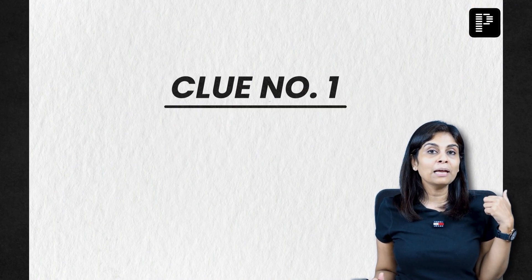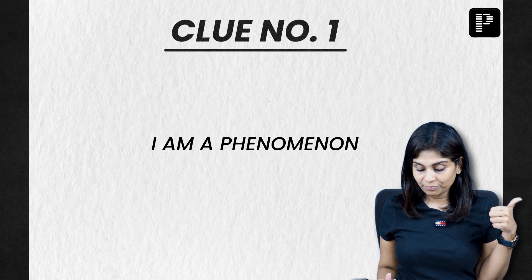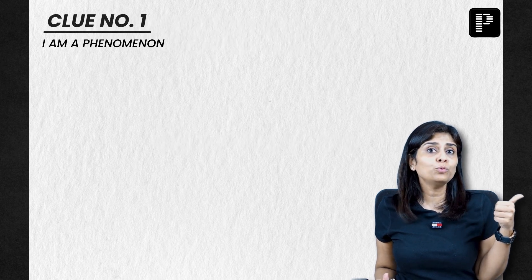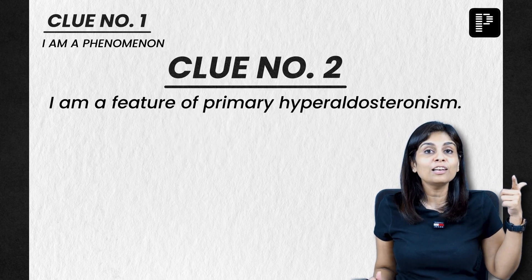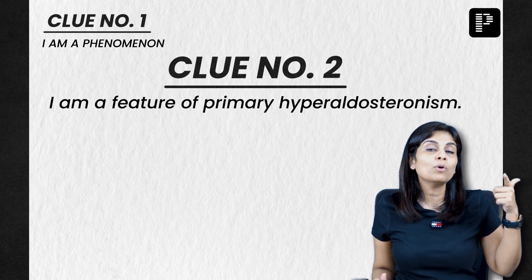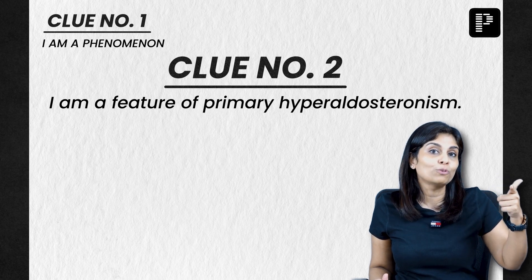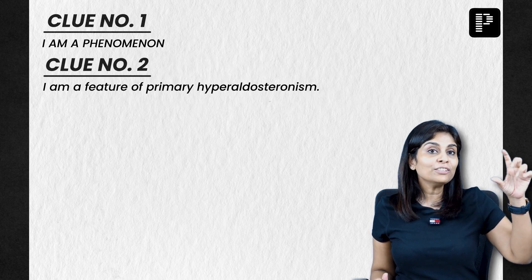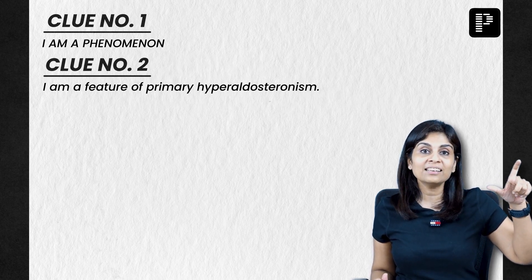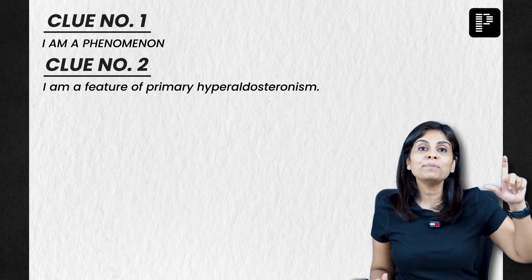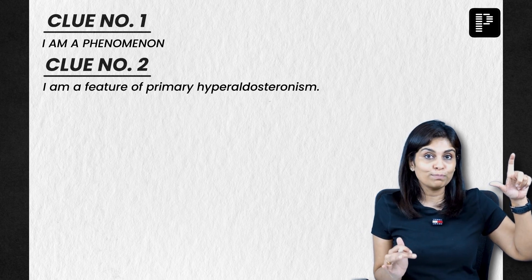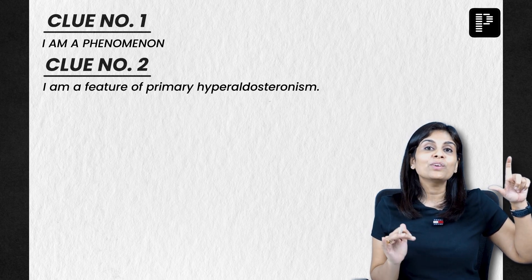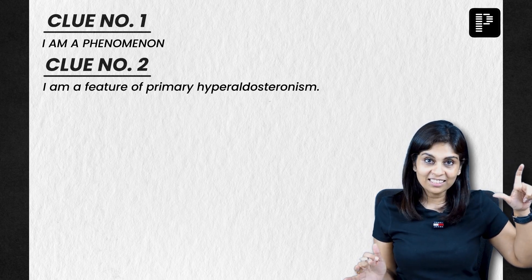Clue number one: I am a phenomenon. Clue number two: I am a feature of primary hyperaldosteronism, or Conn's syndrome. Based on these two clues, if you know the right answer, start typing it in the chat box below and you can give yourself 20 points.